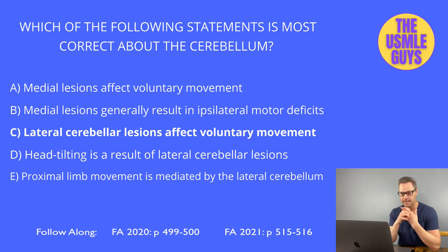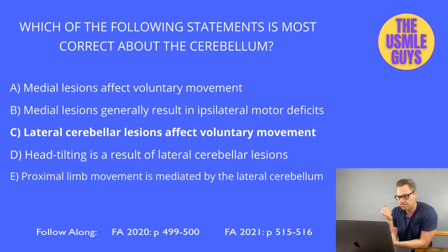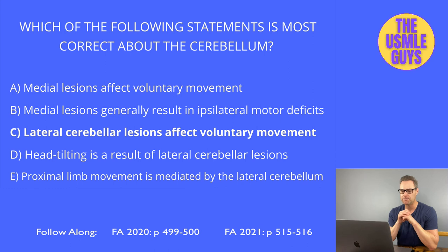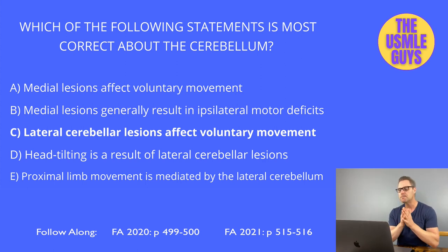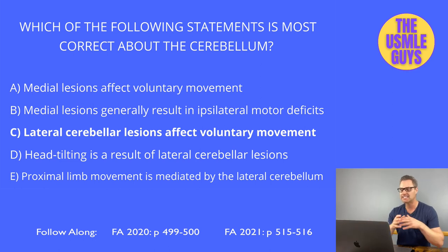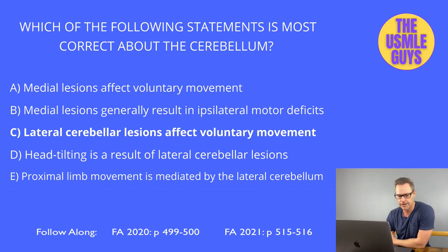The basal ganglia plays an important role in voluntary movement and postural adjustments. It receives cortical input and provides negative feedback to the cortex to modulate movement. The striatum is composed of the putamen and caudate, while the lentiform nucleus is made of the putamen and globus pallidus. There's both a direct and indirect pathway — the direct pathway is excitatory and mediated by the D1 receptor, while the indirect pathway is inhibitory and mediated by the D2 receptor. Dopamine binding D1 stimulates the excitatory pathway; binding D2 inhibits the inhibitory pathway.